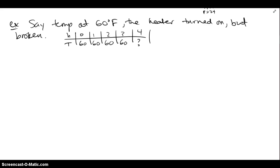Let's say the temperature is at 60 degrees Fahrenheit, and the heater is turned on, but it's broken. So we record the temperature, and this is the table we get. What would be the temperature at the 4th minute? Well, if we were to guess, there's going to be no change whatsoever as I go from one to the next. So our guess would be that it remains at 60 degrees. So no matter what happens, the time goes by, but the temperature stays constant.